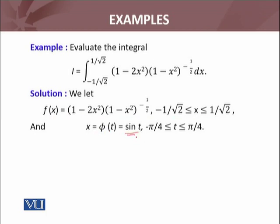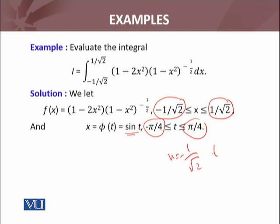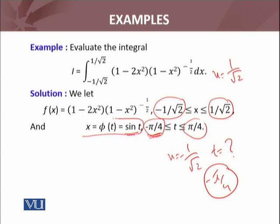Under this transformation, the first thing we do is transform the interval. The alpha and beta from our theorem get transformed: when x equals minus 1 over square root of 2, your t under the transformation becomes minus pi by 4. This is the lower limit of your interval. Similarly, when x equals 1 over square root of 2, you can check that your t will be pi by 4.